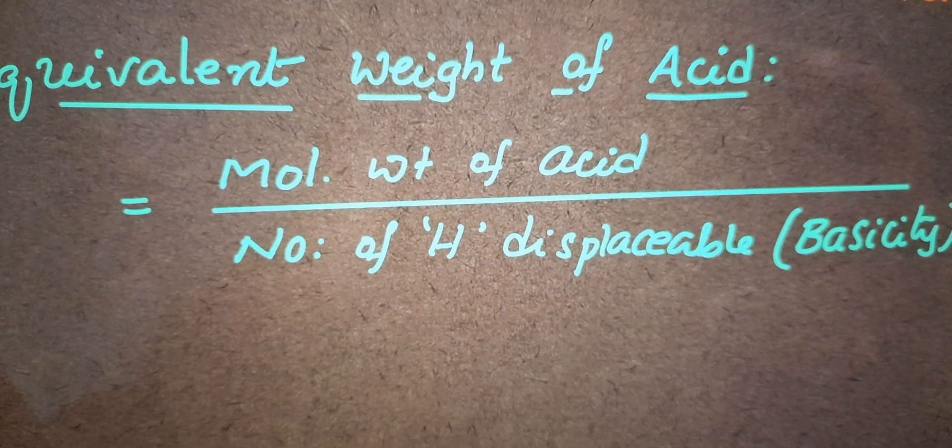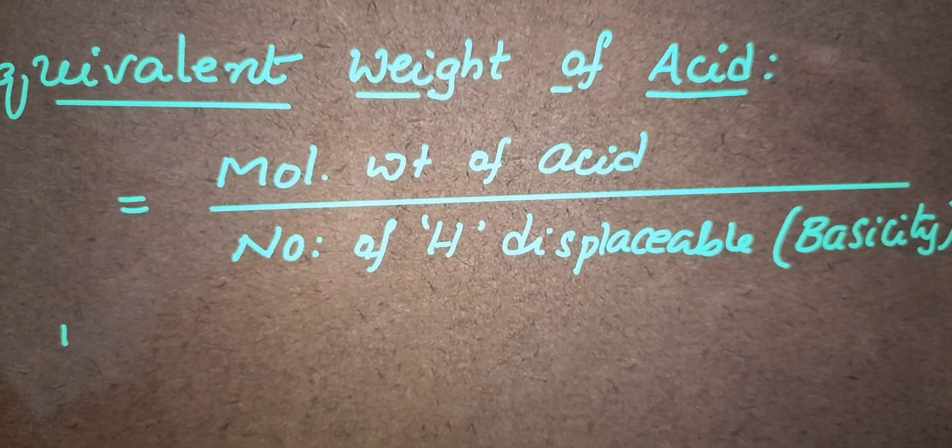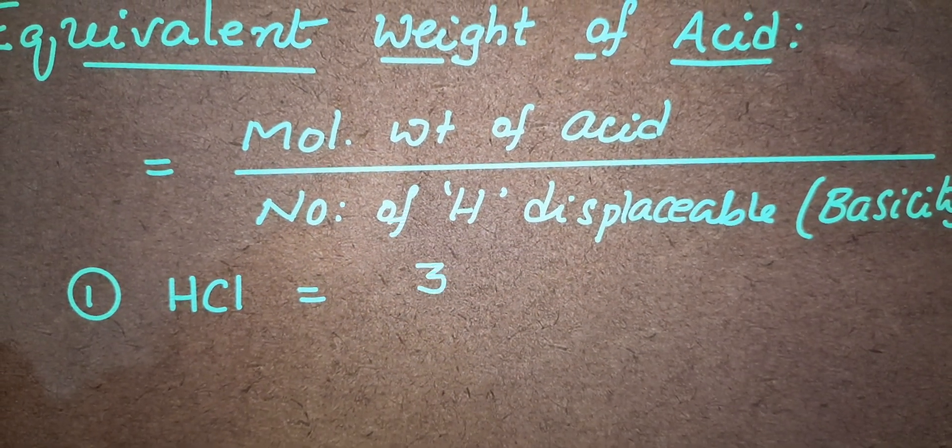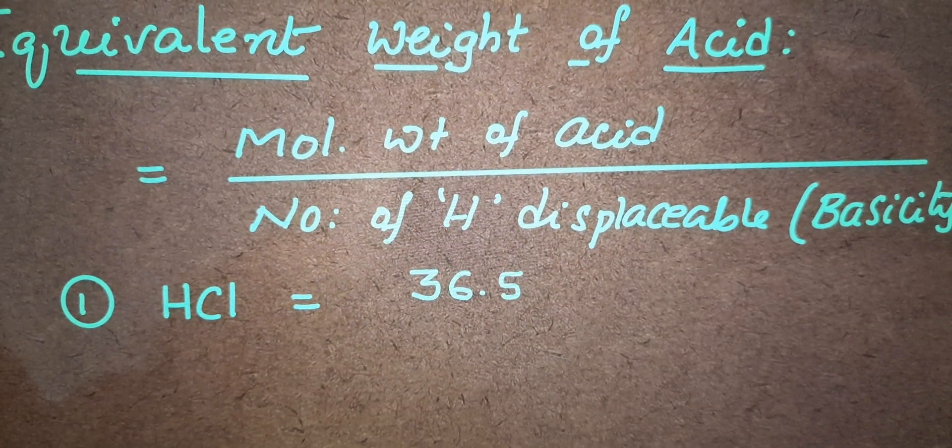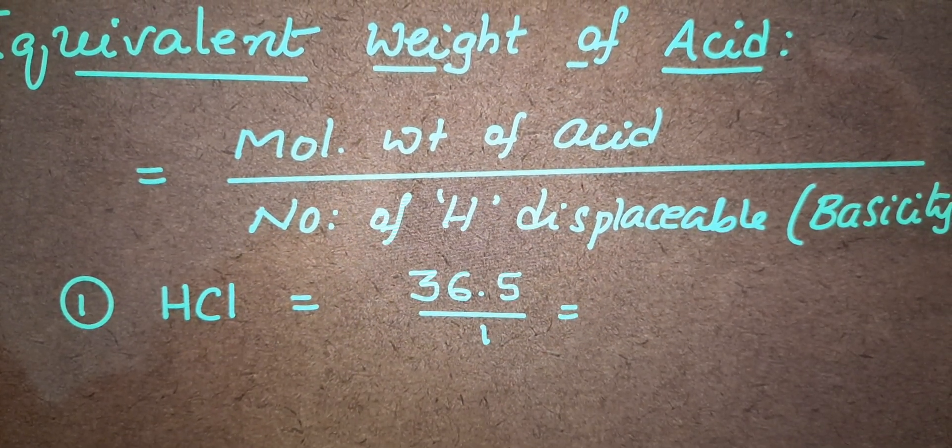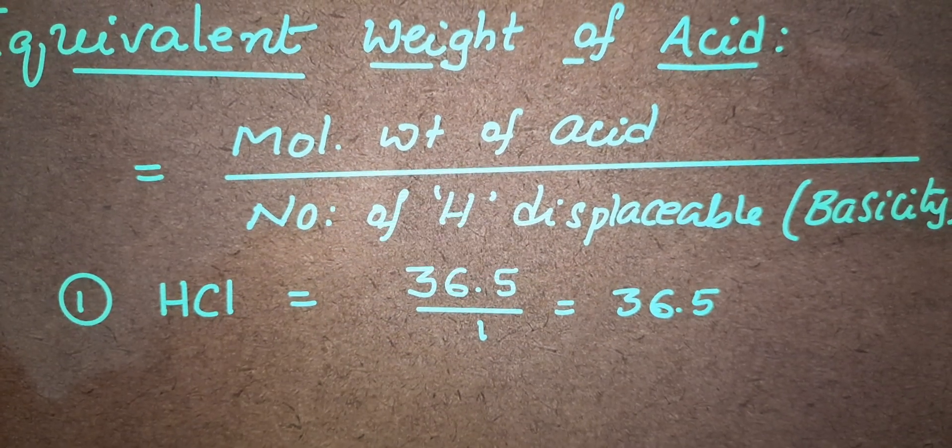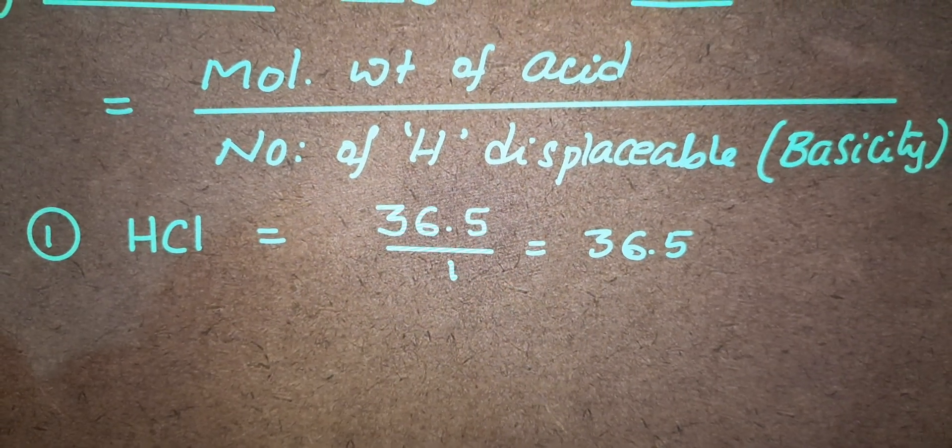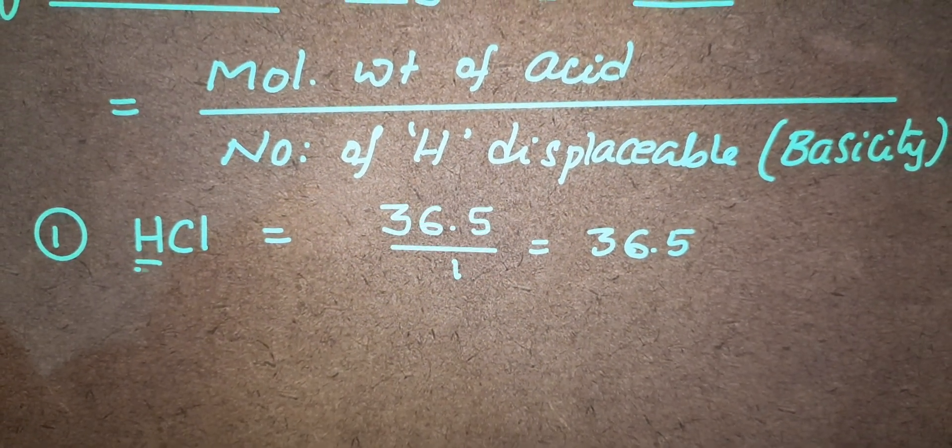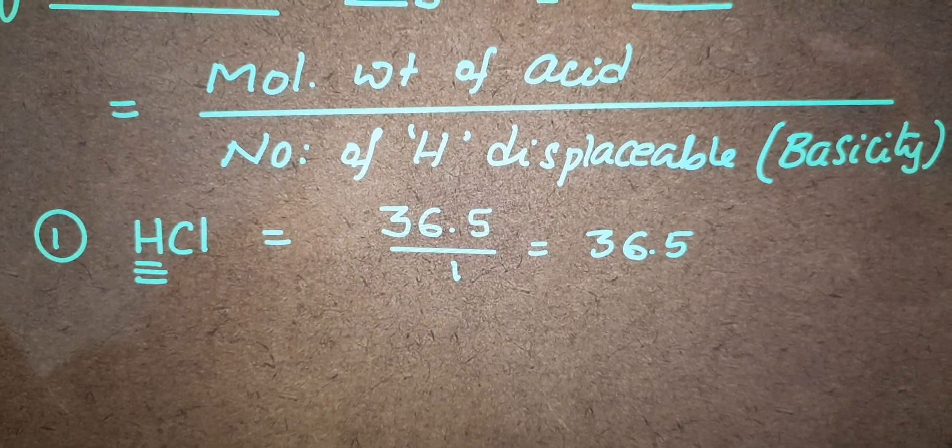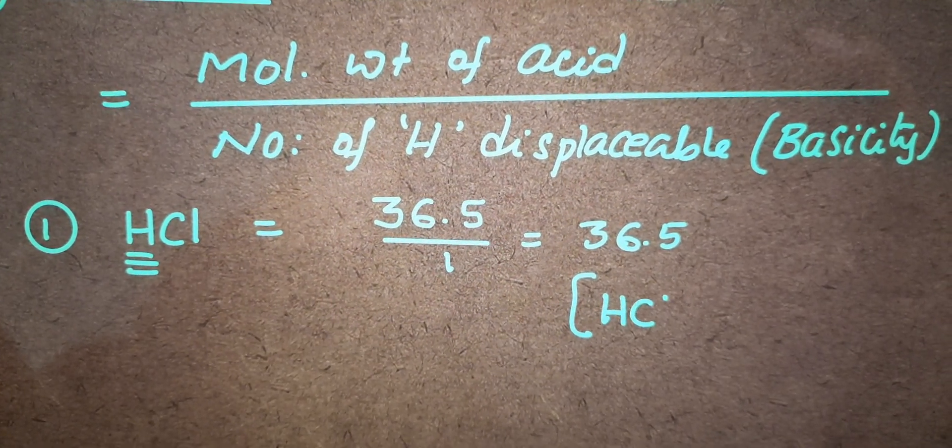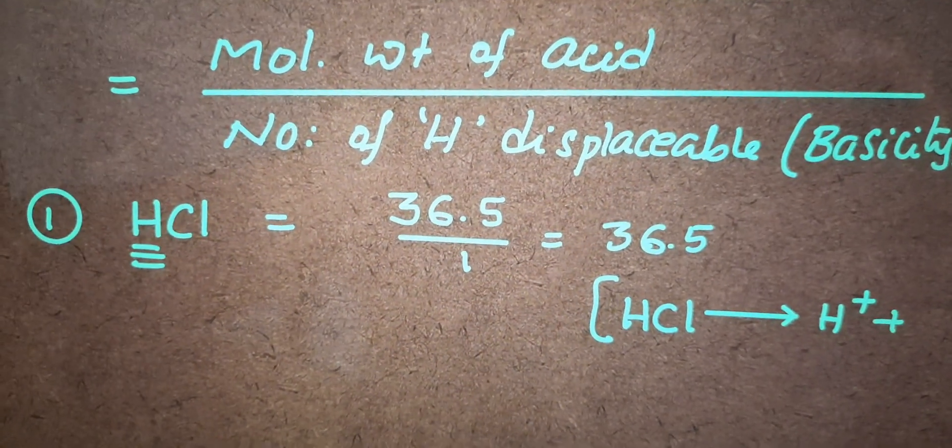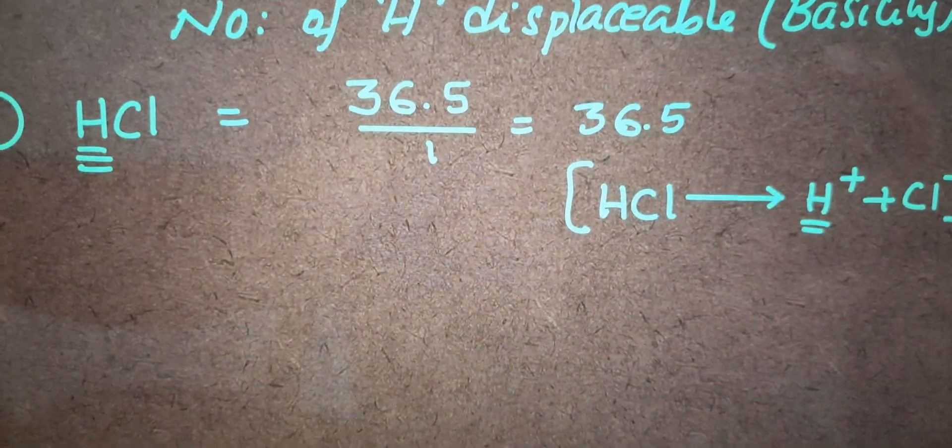Taking an example of HCl, here its molecular weight is 36.5 by 1, so answer will be 36.5. Why? Here I am using 36.5, its molecular weight. Why I am using 1? Number of displaceable hydrogens here is only 1. It has the ability to react with the base. So HCl will produce 1 H+ and 1 Cl-. So this is the displaceable hydrogen.